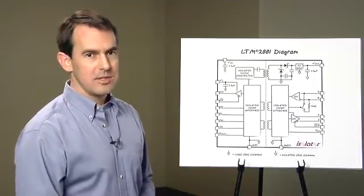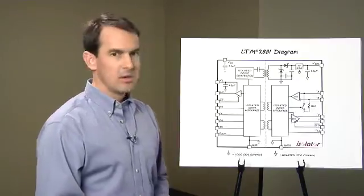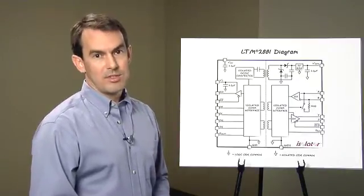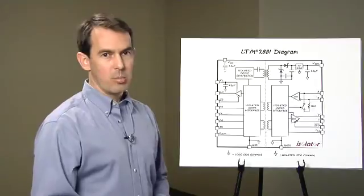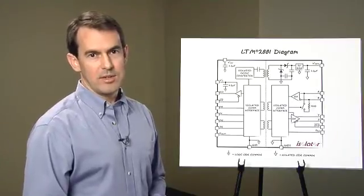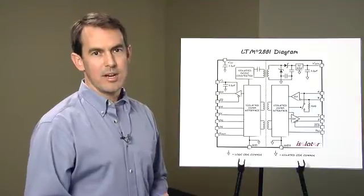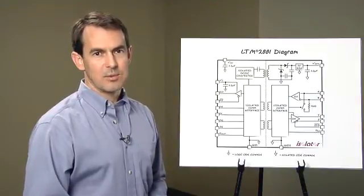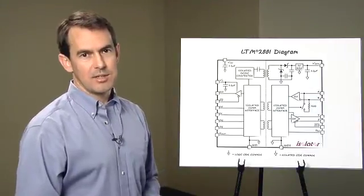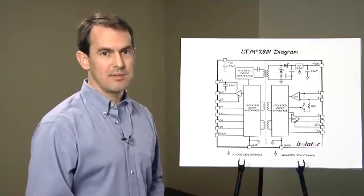A receiver failsafe feature defaults the output RO to a high mark one state when the inputs are shorted, open, or terminated but undriven, as in a bus idle state. This can eliminate the need to pre-bias the bus lines, allowing flexible network expansion and the ability to truly support as many as 256 nodes.